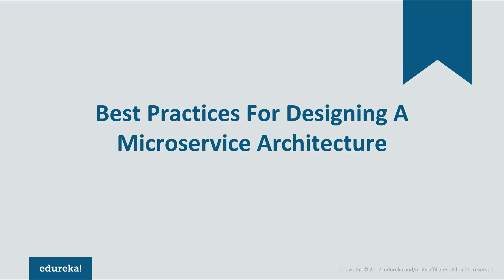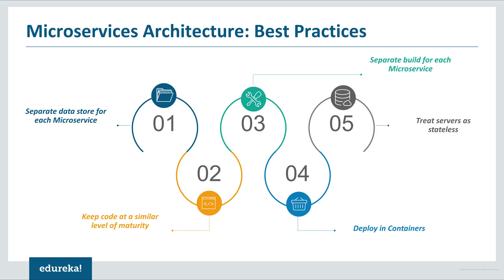Now that you've seen the Uber use case, let's look at best practices to design microservices. First, separate the data store for each microservice. Then, keep the code at a similar level of maturity. After this, separately build each microservice according to its respective features and then deploy into containers. Lastly, create the servers as stateless for communication.